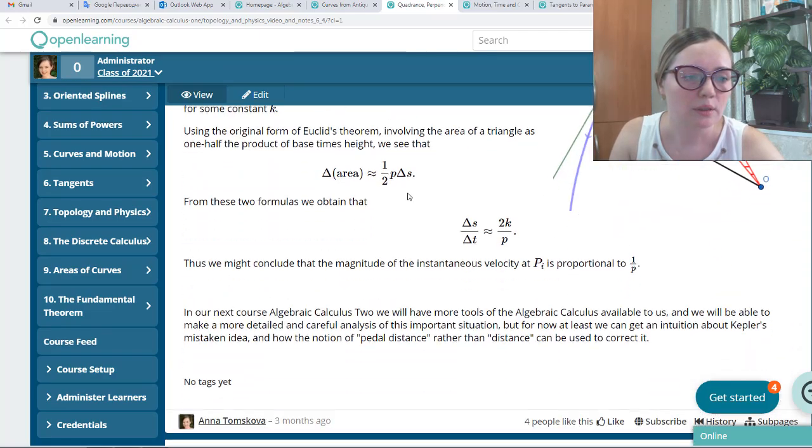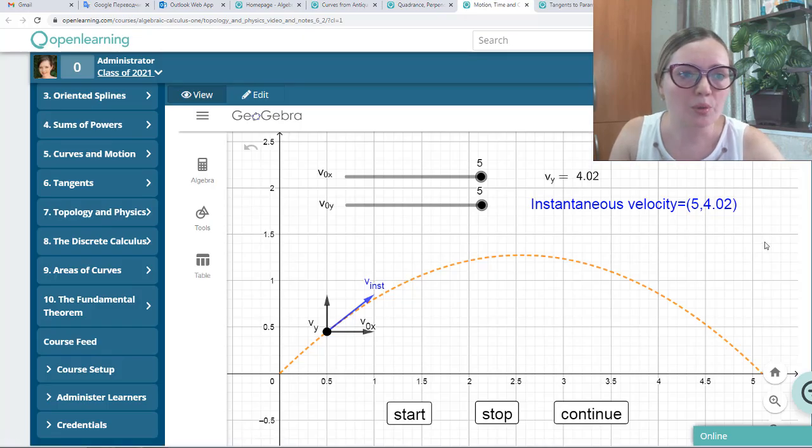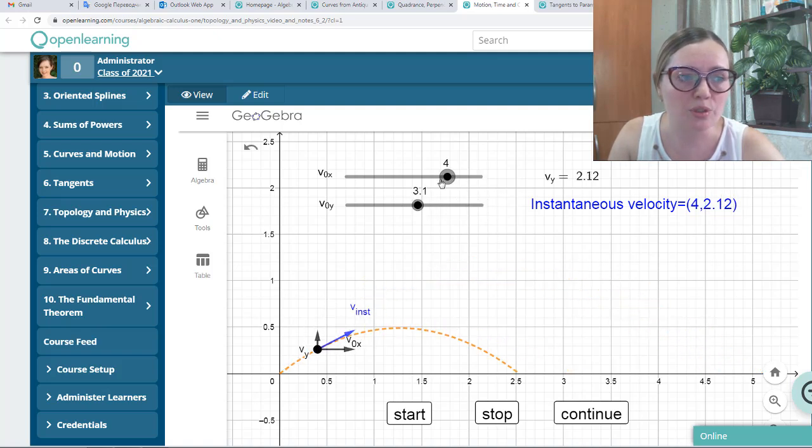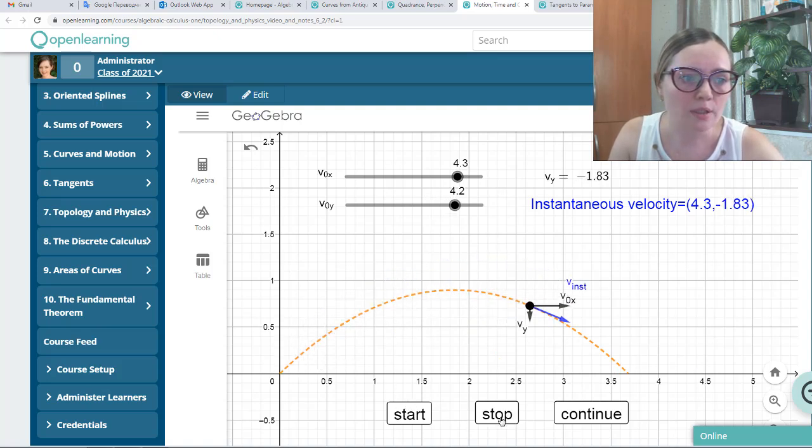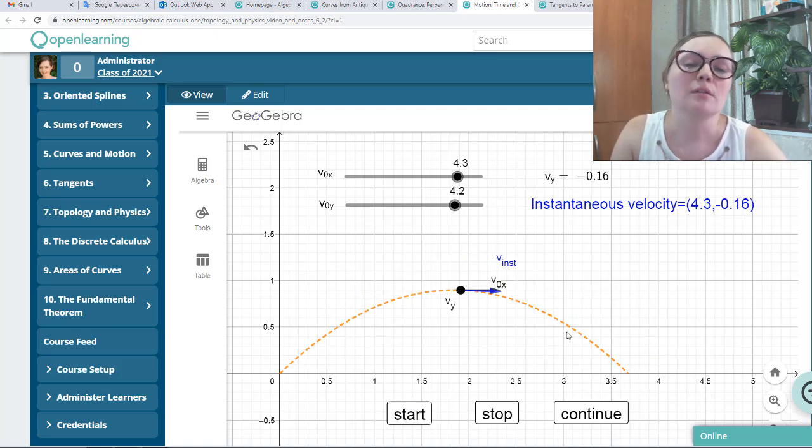Also, you will have not just animations, but some GeoGebra applications where you can change parameters to see what happens. For example, this is the parabolic motion of somebody. You see here the initial velocities - the velocity along x-axis and the velocity along y-axis. They are given by parameters which you can change. Depending on them, the curve, the parabola, also changes. You can start animation, stop it at every moment you like, continue, start over, and so on.